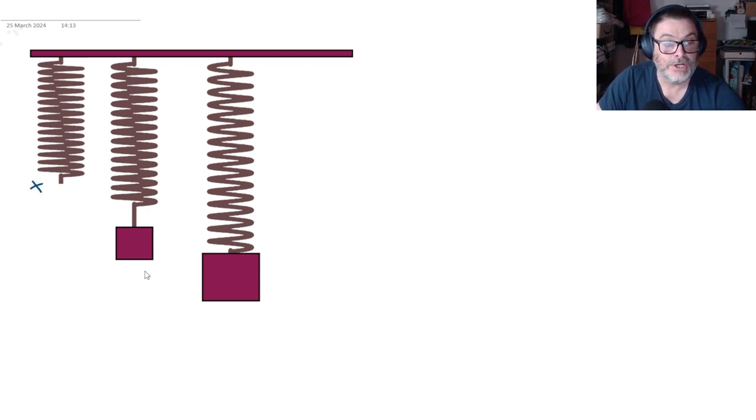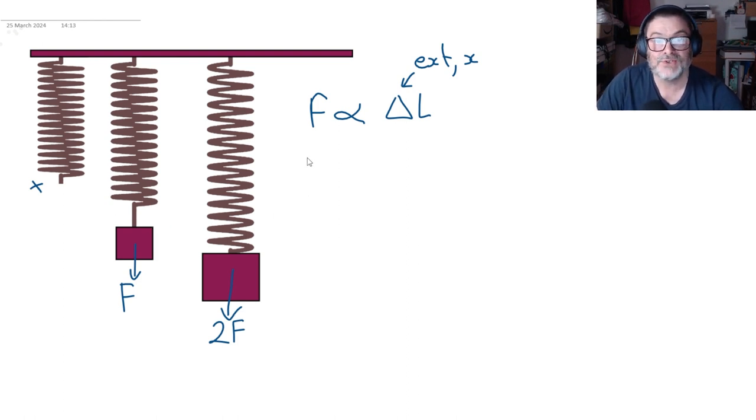Here's a bog standard kind of spring, and in the second diagram we've added a force of F, a weight or something. In the third one we've got 2F. Now what you'll find is that the force that you add on, up to a certain point, is proportional to the extension of the spring. Extension is written in different ways as X or ΔL or even E sometimes. If we put a tensile force, and tensile basically means stretching, the force is proportional to the extension.